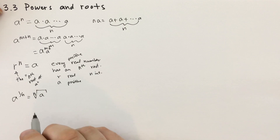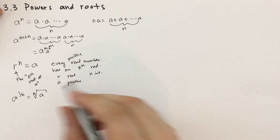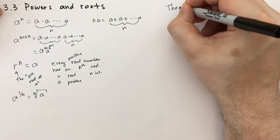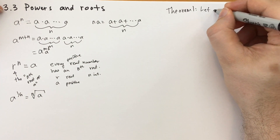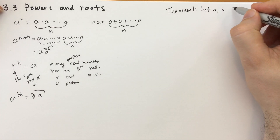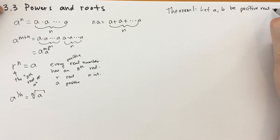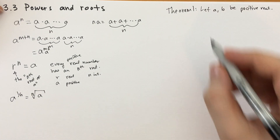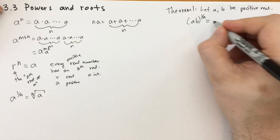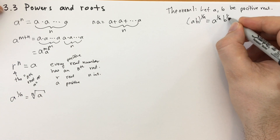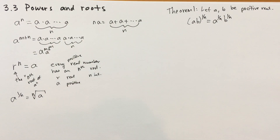We're beyond squares and square roots now — we're doing any integer root. Here's Theorem 1: let a and b be positive real numbers. The nth root of a times b equals the nth root of a times the nth root of b. The proof is rather straightforward and quick.